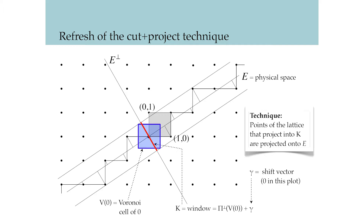After the cut, we simply project all the points inside of the cut window to the physical space. Here, on the physical space, a one-dimensional quasicrystal is obtained. The cut window can shift in the direction of the perpendicular space to change the point set in the cut window and cause dynamics in the one-dimensional quasicrystal.